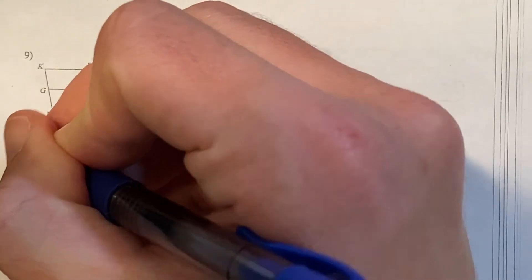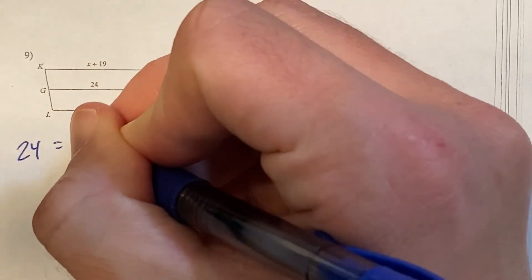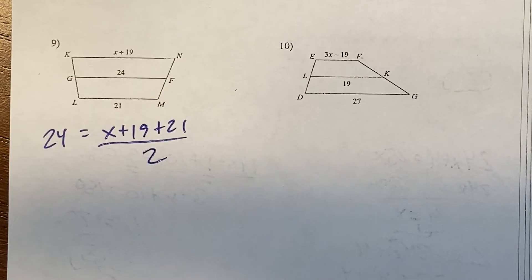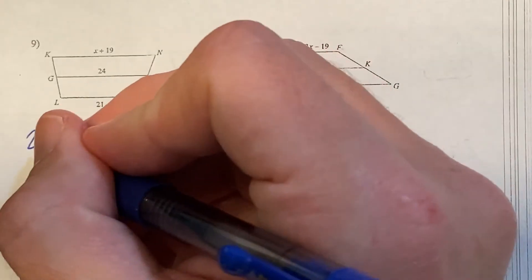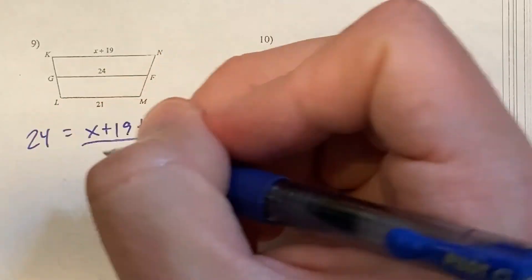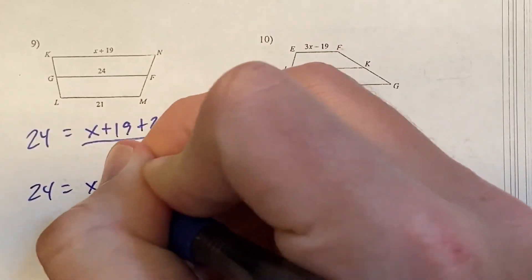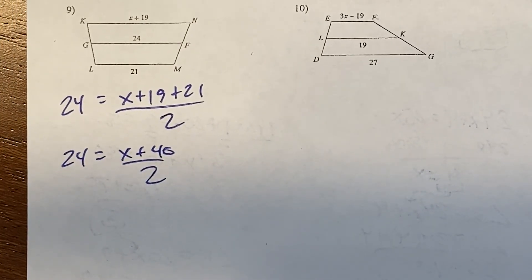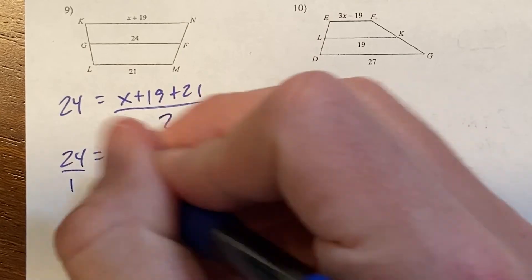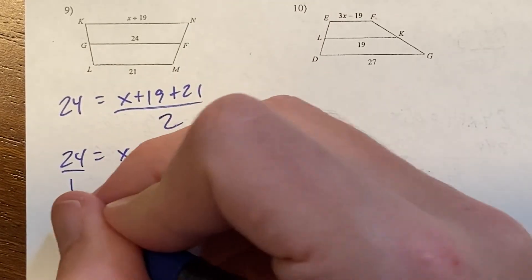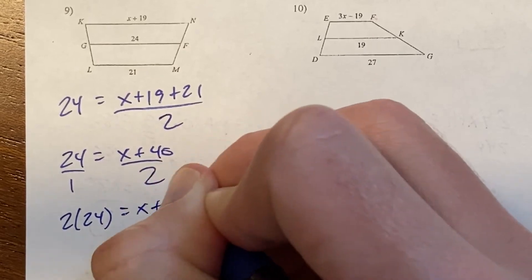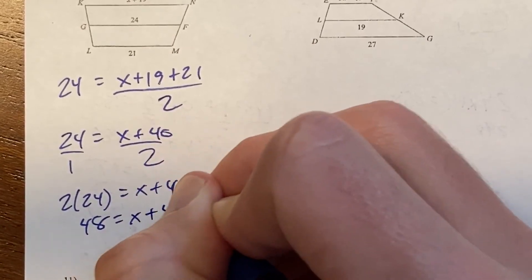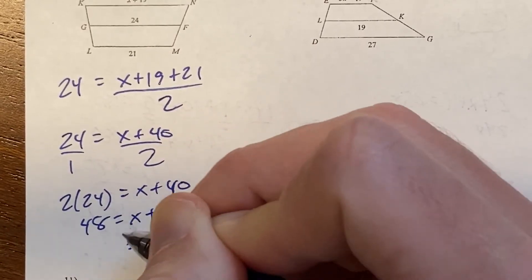The middle value 24 equals the average of the top and the bottom, so add the top and bottom and divide by 2. Simplifying: 24 equals (x plus 40) divided by 2, since 19 plus 21 equals 40. Cross-multiplying: 2 times 24 equals x plus 40, so 48 equals x plus 40, subtract 40, x equals 8.